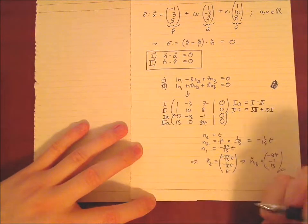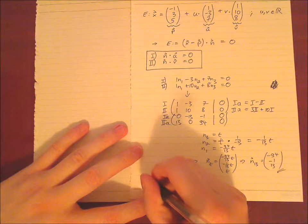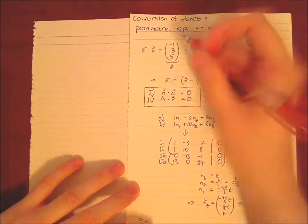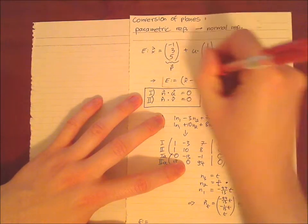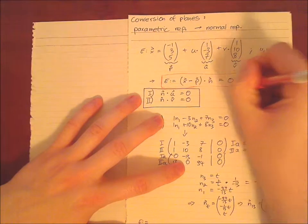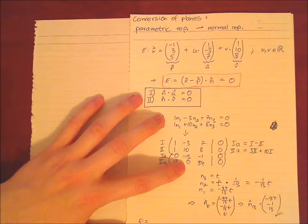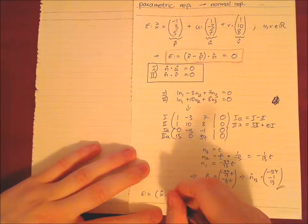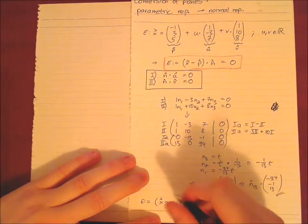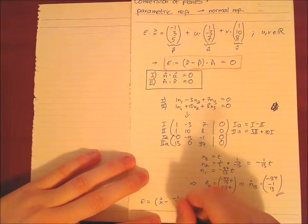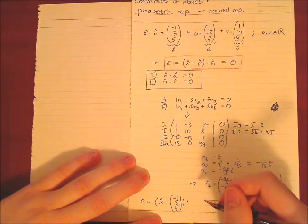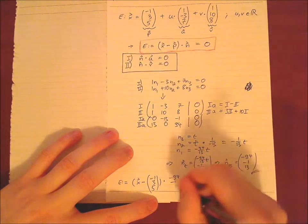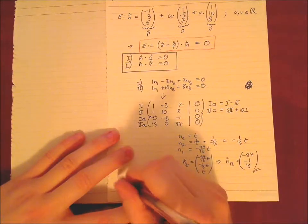Then final step, we just have to write down our normal representation of our plane. We already have the definition above right here. This of course you have to remember, this is essential. This is more essential than knowing actually the vectors. This is the definition what we seek. And now we can just insert our solution. So we have vector x minus p. We already know if you remember, this is the vector above, support vector, (-1, 3, 5), times the normal vector. And the normal vector we just calculated times (-94, -1, 13) equals 0. That's our solution.